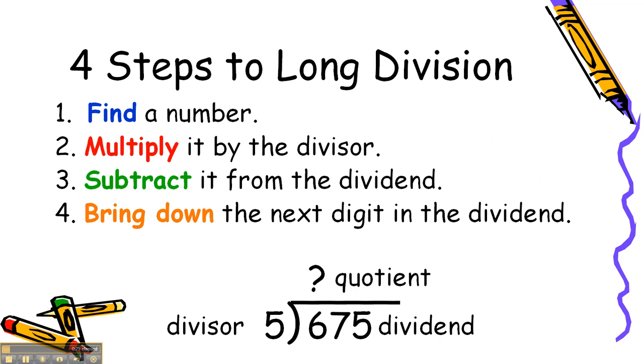Now, the four steps of long division are find, multiply, subtract, bring down. We find a number, multiply it by the divisor, subtract it from the dividend, and bring down the next digit in the dividend.